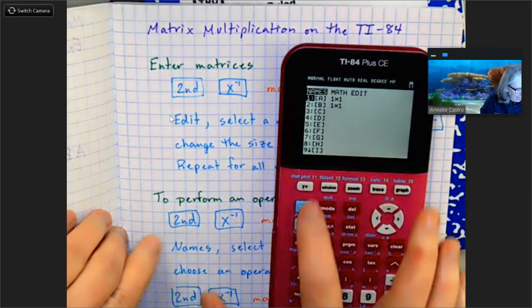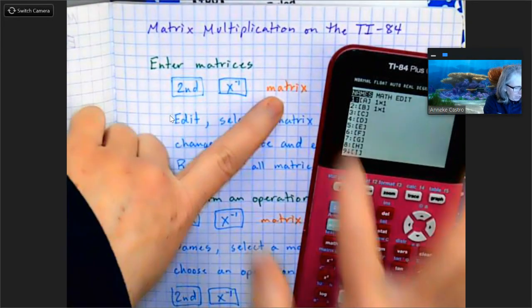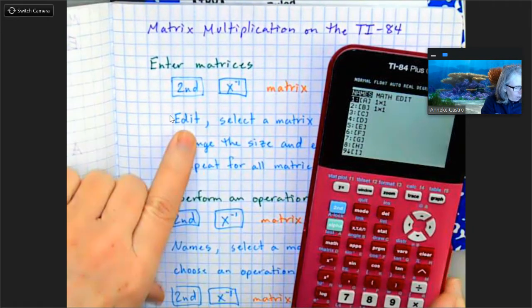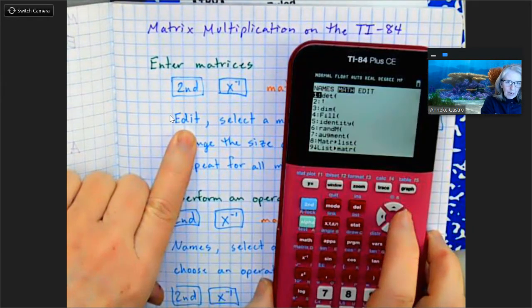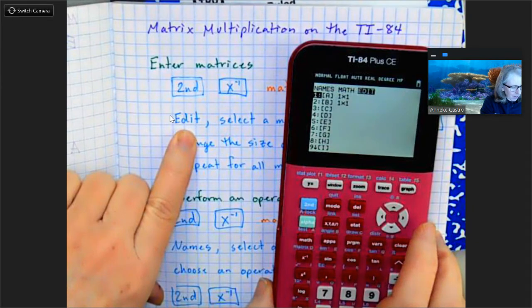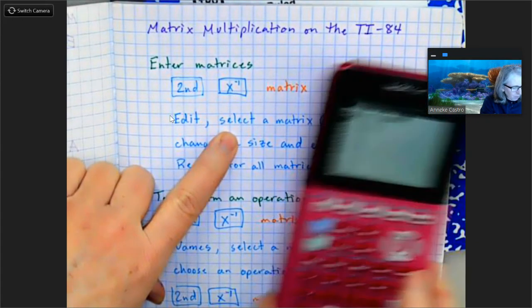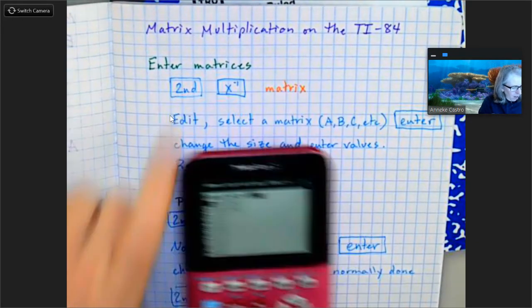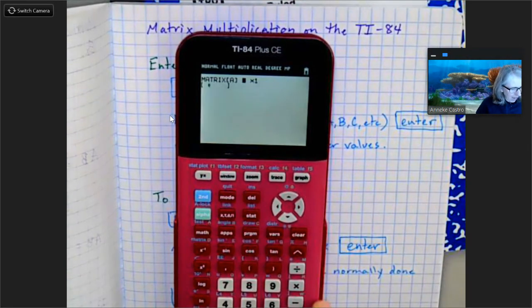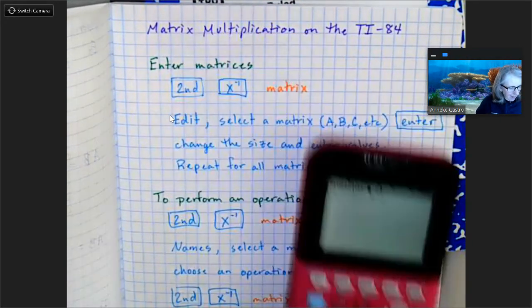So I did second x^-1, that gets me to my matrix menu. I want to select edit, so I'm going to scroll over to the right. There's my edit and I'm going to select a matrix. Right now it's on A and that's fine, and I'm going to hit enter.